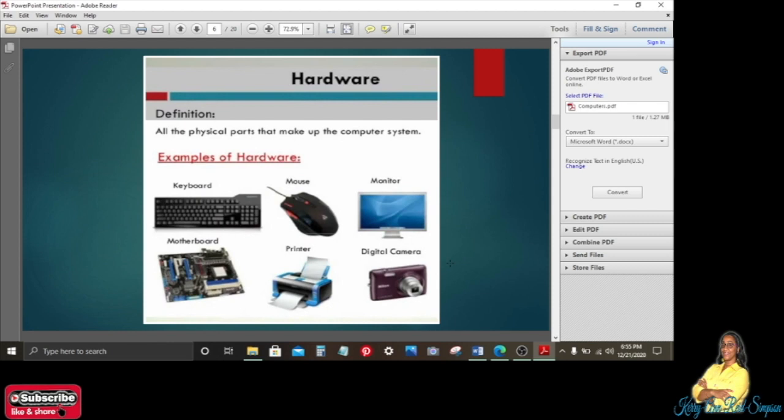Now we're going to be looking a little bit more on hardware. We already said that it is the physical parts that make up the computer system. So these that you're looking at now, these pictures or images, are examples. So we have the keyboard, the mouse, the monitor, the keyboard, the printer, and the digital camera. And those are just a few examples. There are much more.